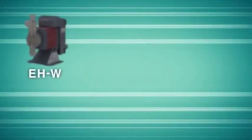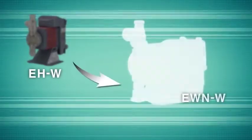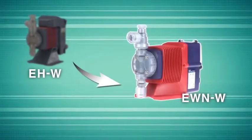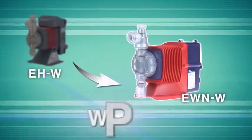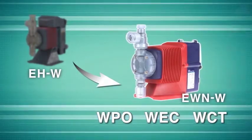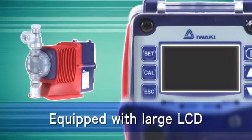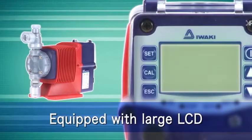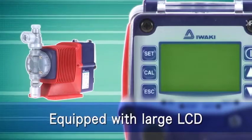The EWNW type was developed as a successor to the EHW type and is available in three options: the WPO, the WEC, and the WCT types. Using a larger LCD display, the EWNW provides more information to the user in one display.